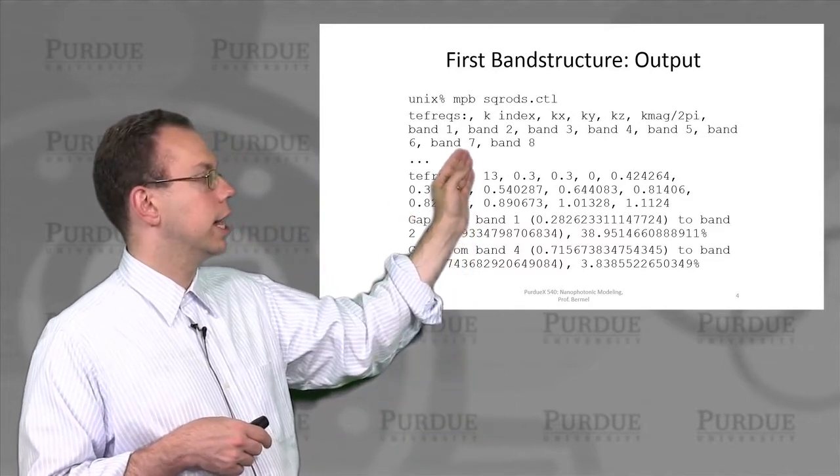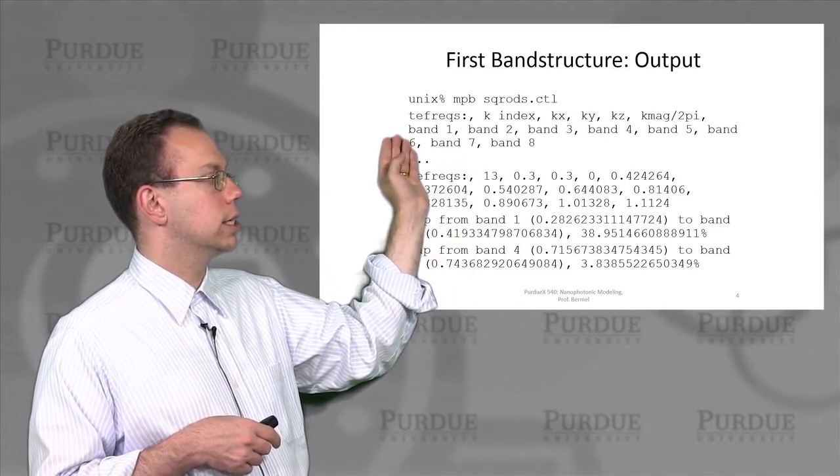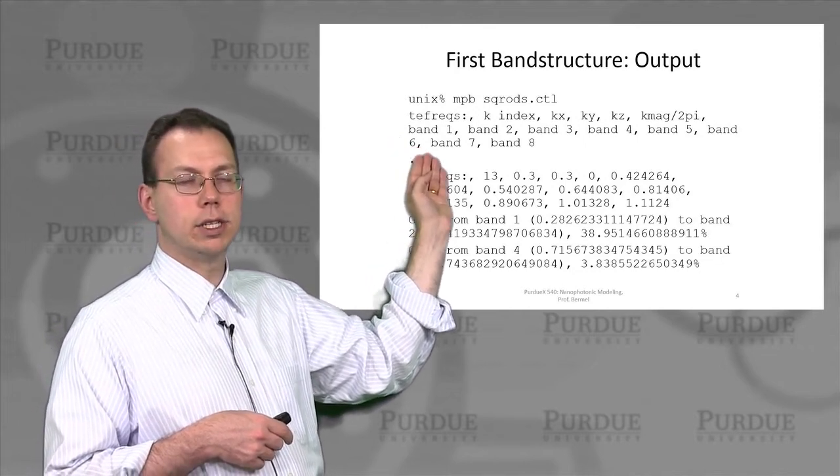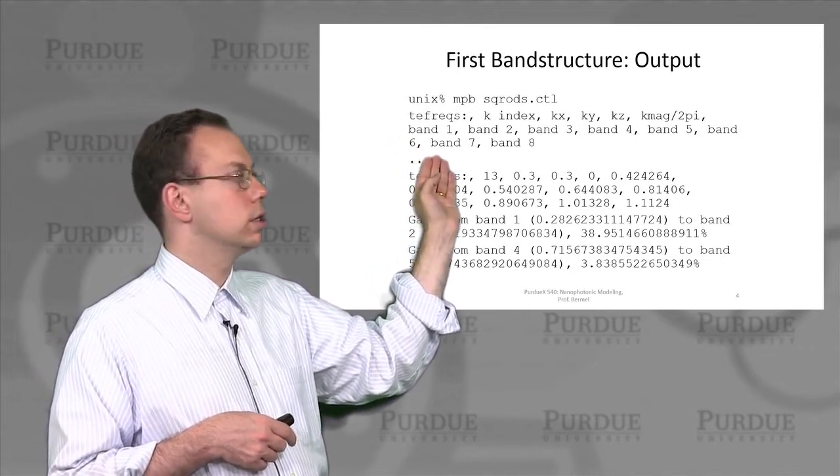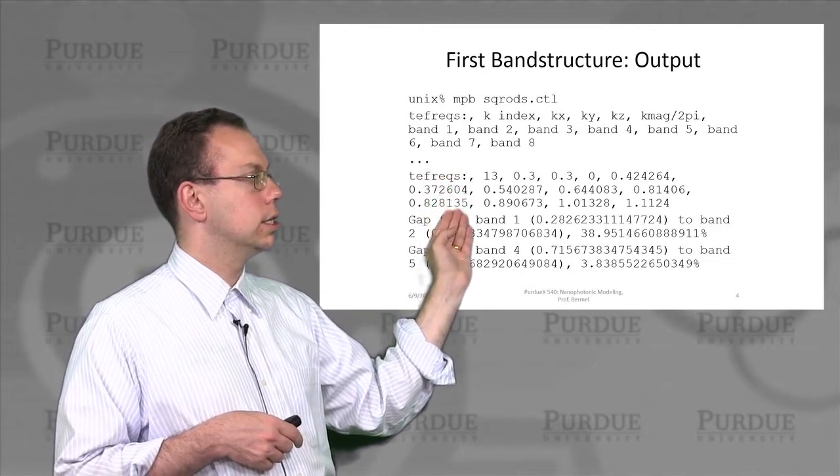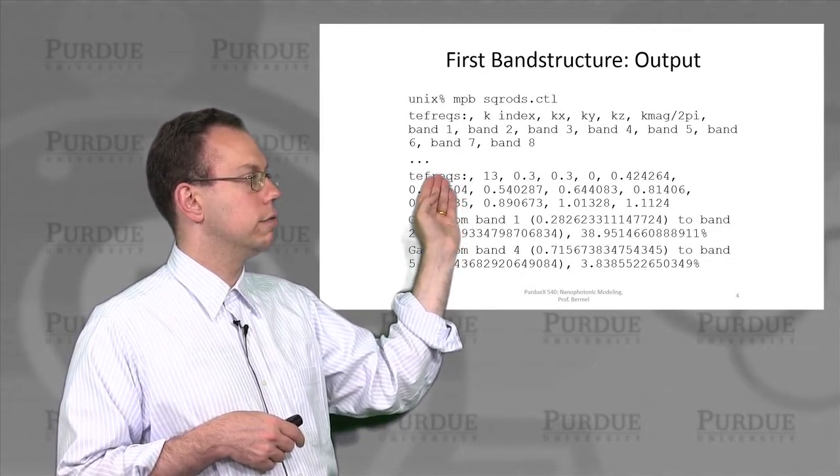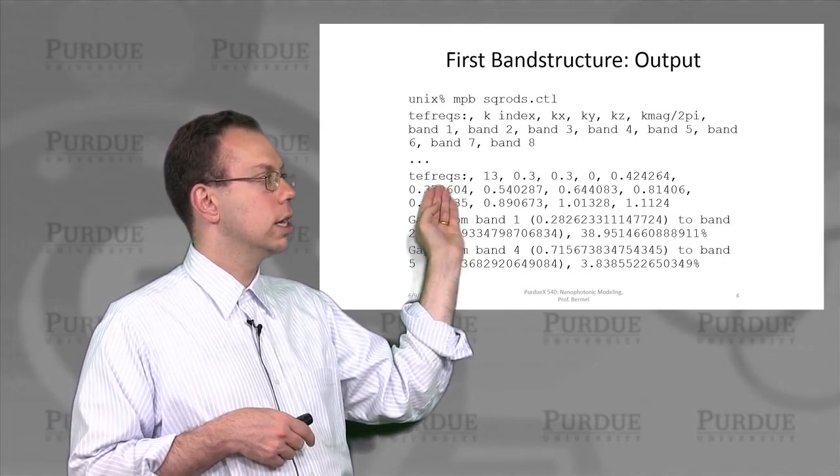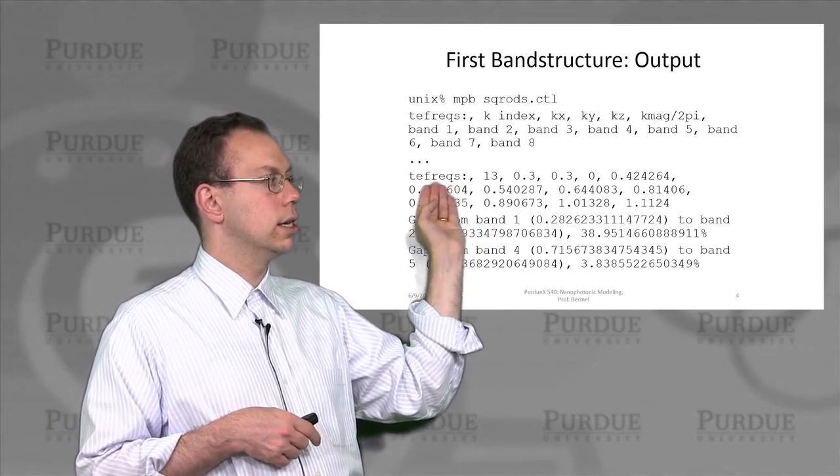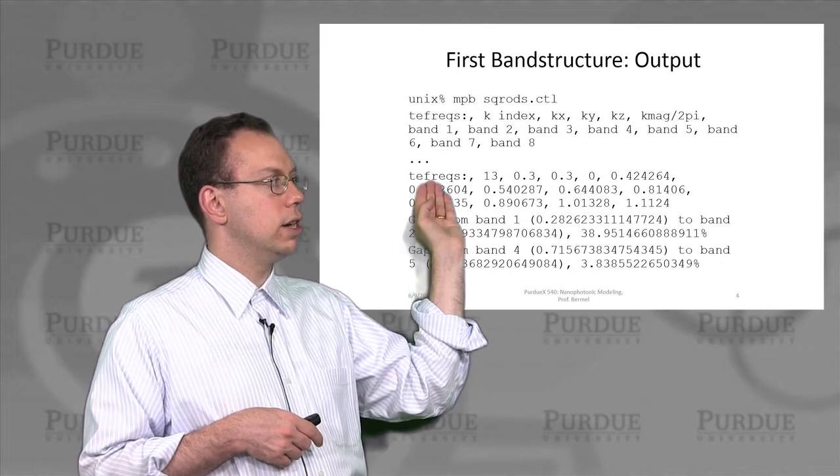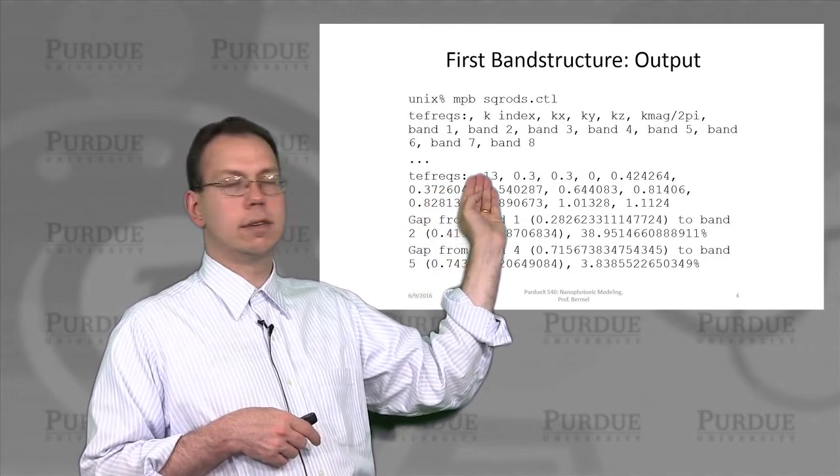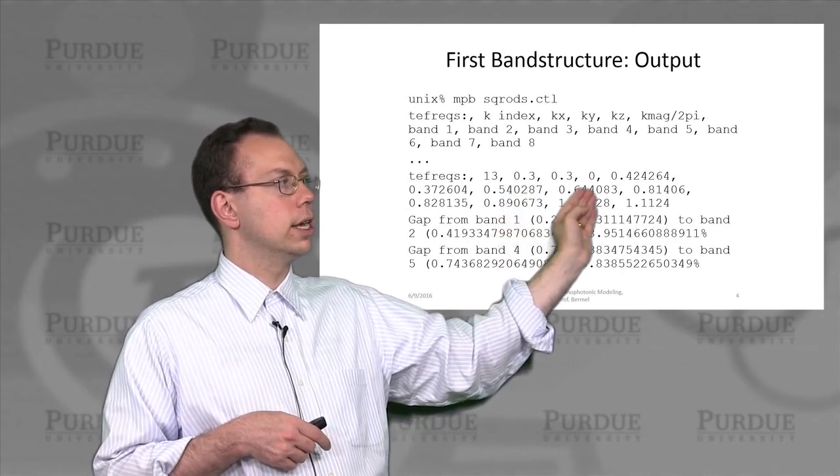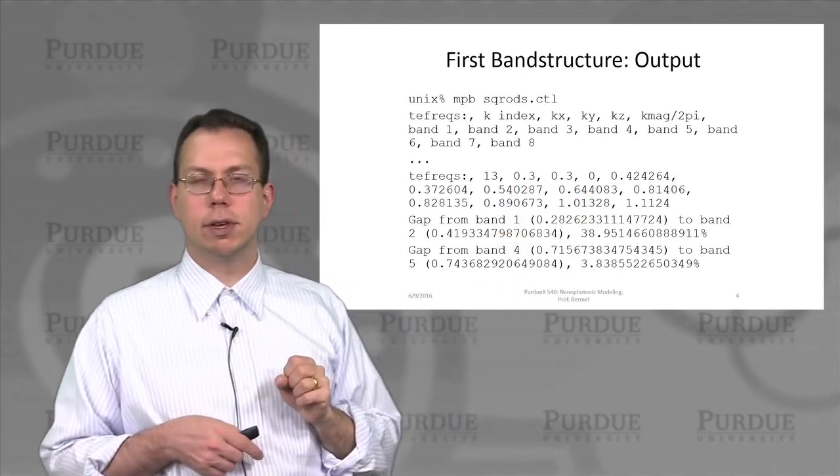Then the output that you would get from this would give us first like this line, which is kind of a guide to make sure that you understand what the output looks like. Excerpting from the output, we might have lines that kind of look like this, where it first shows us the index of the k value that we're looking at, the values of k in each direction, the total magnitude, and then all of the band frequencies that we had calculated.